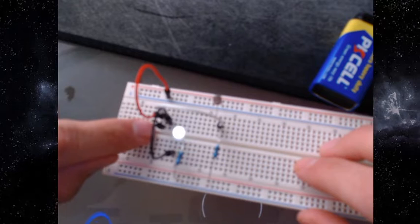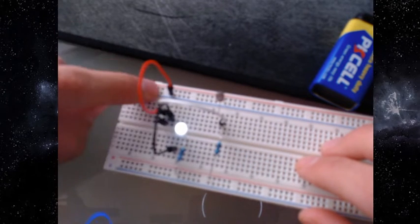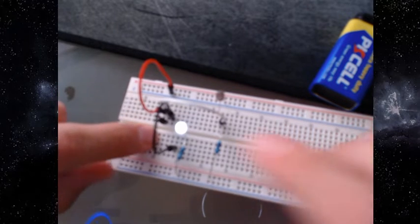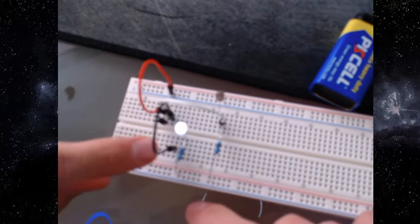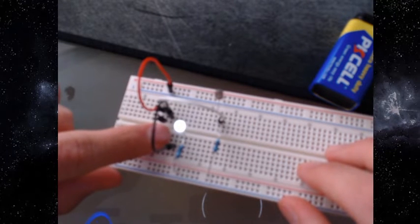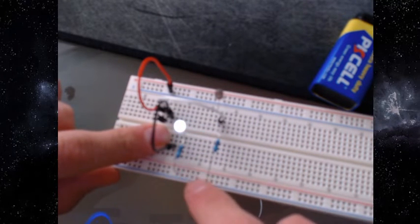Then the red one to the negative of this one, it will be to a negative rail board. And the positive will go to the negative of the LED, and the positive LED will be connected with a 330 ohm resistor.